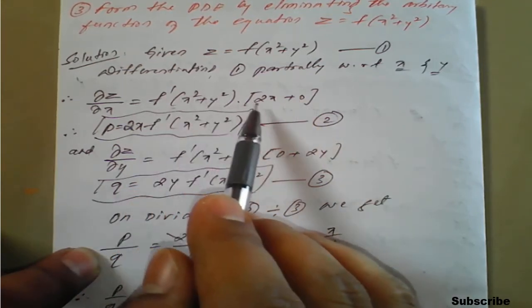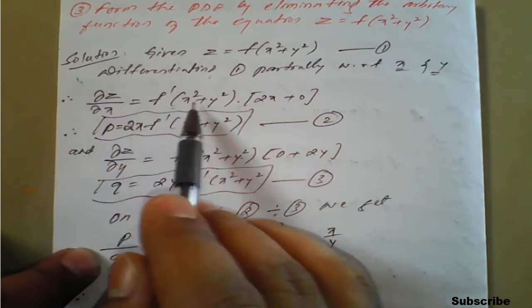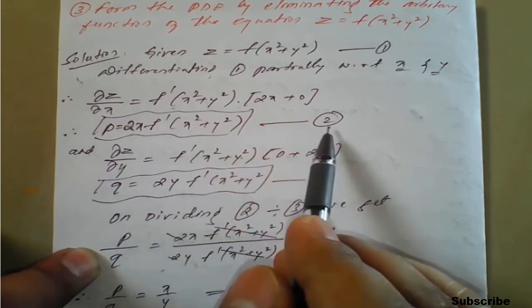Therefore this equation can be written as 2x. This ∂z/∂x as p, 2x before f dash of x square plus y square, give equation number 2.